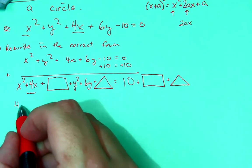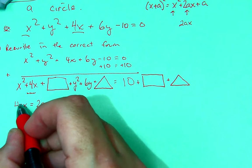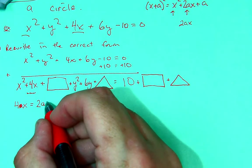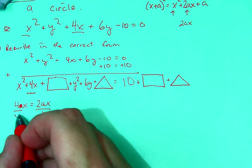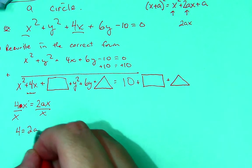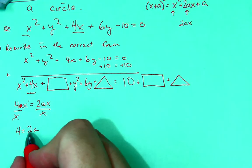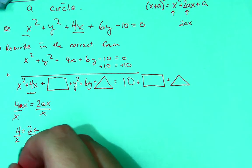Now, that 4x is equal to 2ax. The first thing we can do is divide by x, and the x's divide out, we're left with 4 is equal to 2 times a. Now, divide by 2, a is equal to 2.